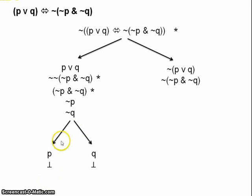And as you can see, both branches close because we've got a contradiction there. P contradicts not P, Q contradicts not Q, so both branches close.